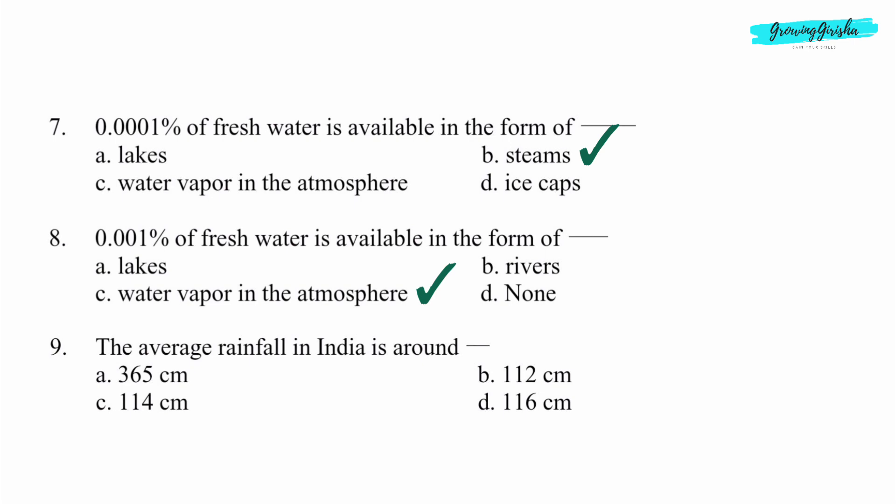Question 9. The average rainfall in India is around dash. Option C: 114 cm.